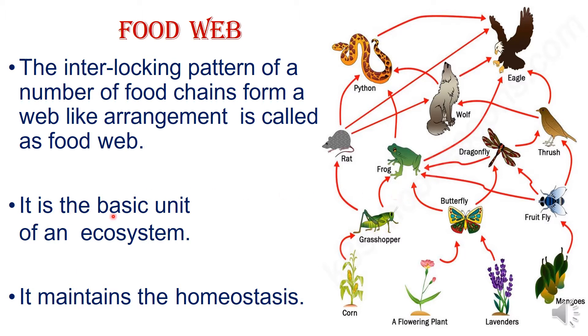A food web is a basic unit of an ecosystem. It maintains the stability of an ecosystem.